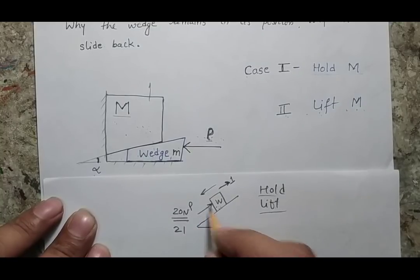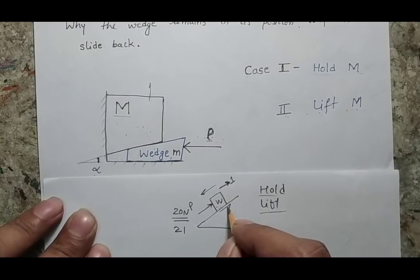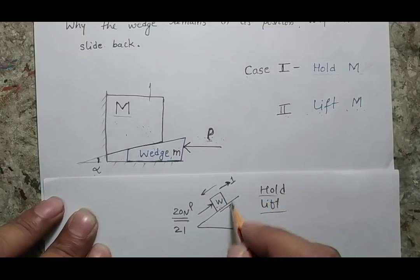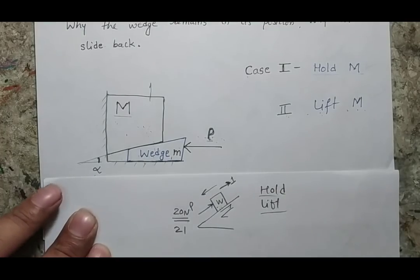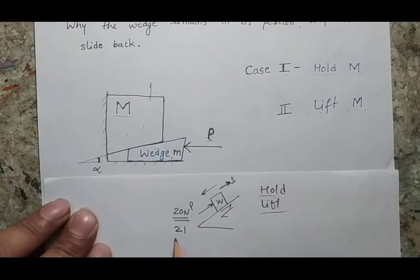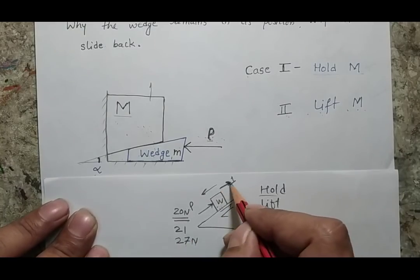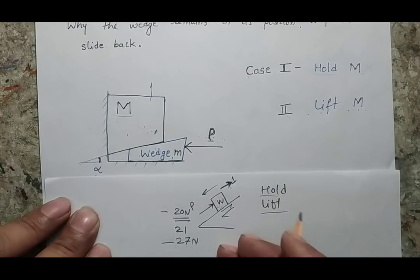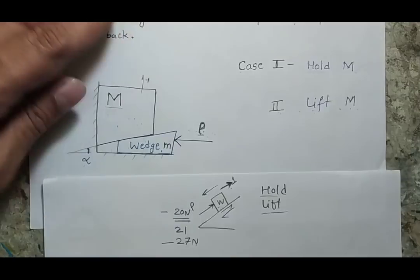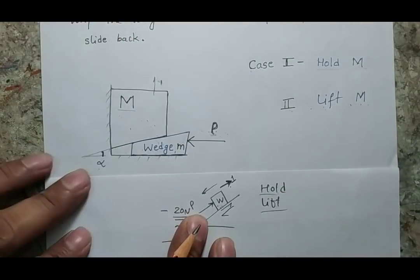When we are holding the body, friction is acting downward. When we try to lift the body, friction acts upward. It may be that only when we apply up to 27 Newtons does the body start moving upward. Between 20 and 27 Newtons, nothing will happen and the body will remain in equilibrium.